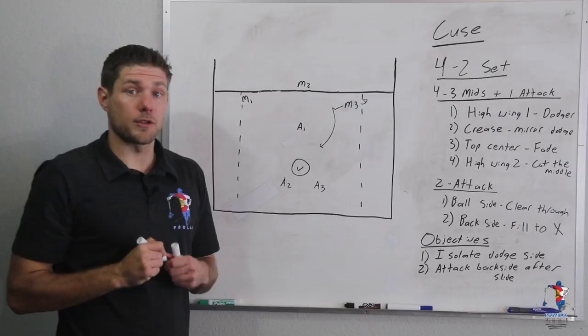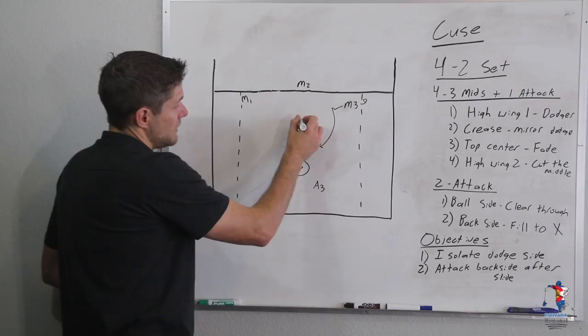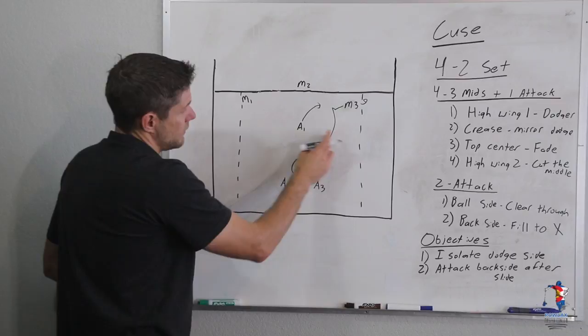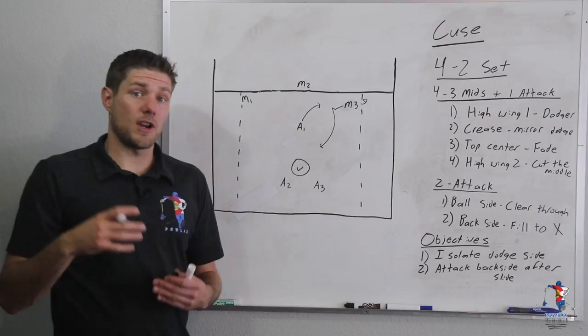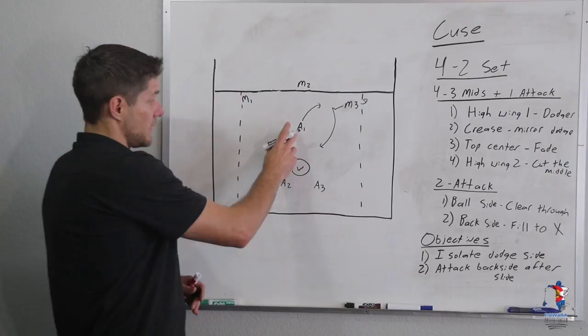The second rule we have is the crease player. The crease player is always going to mirror the dodger. As M3 dodges down the alley, A1 is going to mirror above him. If he did sweep across the top, A1 would float out to the right. He basically stays opposite the dodger. This puts the defense in a very precarious situation because odds are they're going to slide from the crease, which should leave this player open.